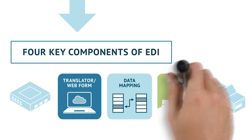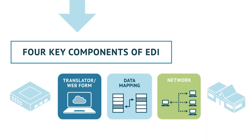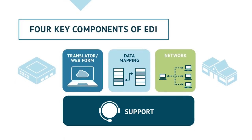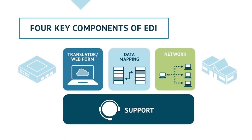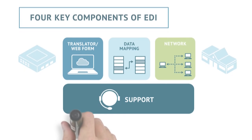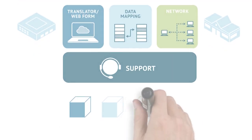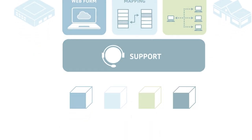Third, all suppliers need a secure and reliable trading network or connection for transmission of EDI transactions with their customers. Fourth is the support and maintenance required to implement an EDI system and keep it running smoothly. These four components are traditionally delivered separately by multiple providers.